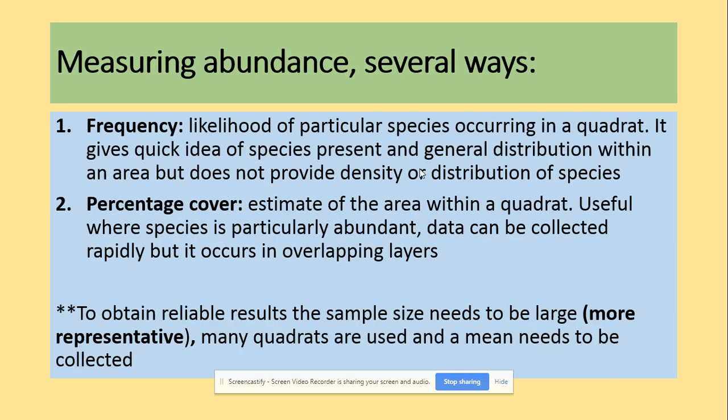Measuring abundance is done in a few ways. You can look at frequency — the likelihood of a specific species occurring in the quadrat, how often they appear. It gives a quick idea of species present and general distribution but does not provide density or distribution of species. You can also use percentage cover to estimate the area within the quadrat. To obtain reliable results, the sample size must be large to be representative, so many quadrats are used and the mean is calculated.